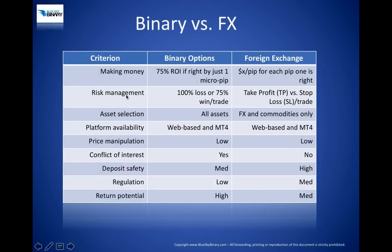To the left here you see the various criteria on which a money-making operation in any asset class is considered viable, and we're going to compare binary options to foreign exchange. Starting with how traders make money: in binary options, you are rewarded 75% ROI on average — it could be as low as 65 or as high as 90, depending on the time of day and which asset you're trading. If you are right on your call or put position, just even by one micropip, you are rewarded the entire 75%.